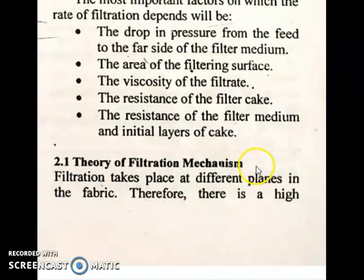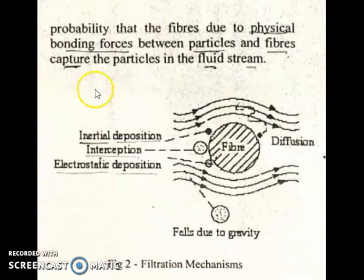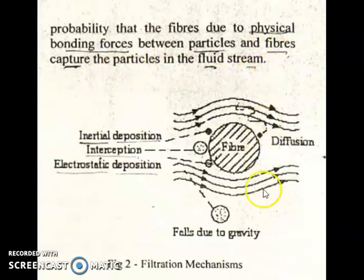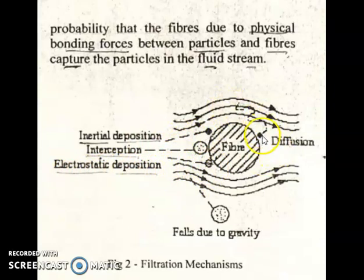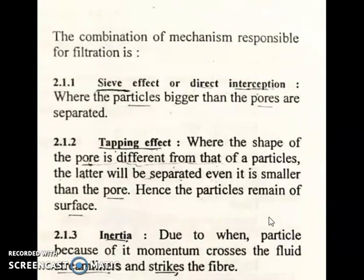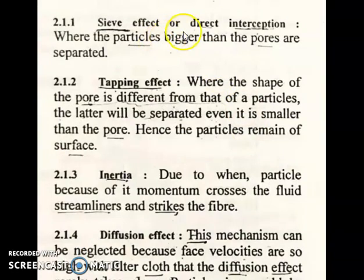Now, the theory of filtration mechanism. Filtration takes place at different planes in the fabric. Therefore, there is a high probability that fibers, due to physical bonding forces between particles and fibers, capture the particles in the fluid stream. There is a combination of mechanisms responsible for filtration. These are: direct interception, inertia deposition, electrostatic deposition, diffusion, and fall due to gravity. Direct interception is where particles bigger than the pores are separated.